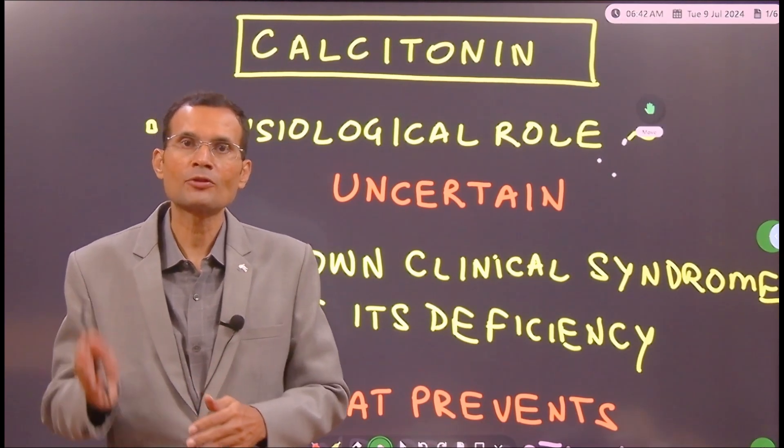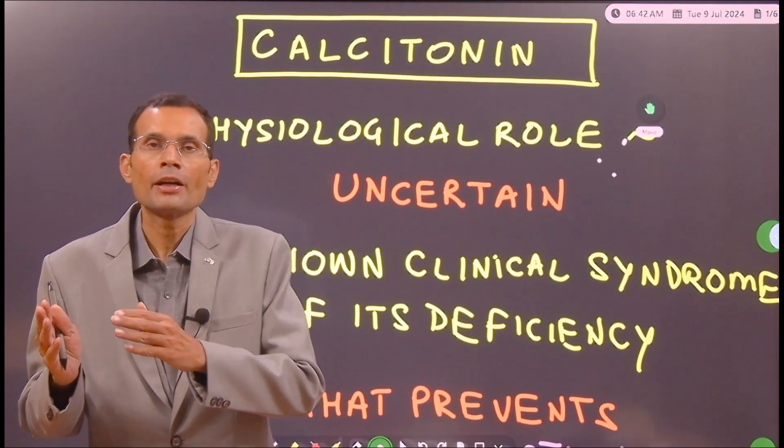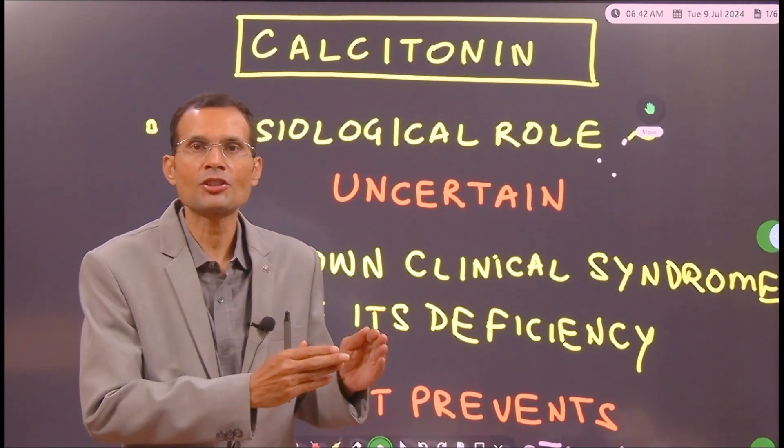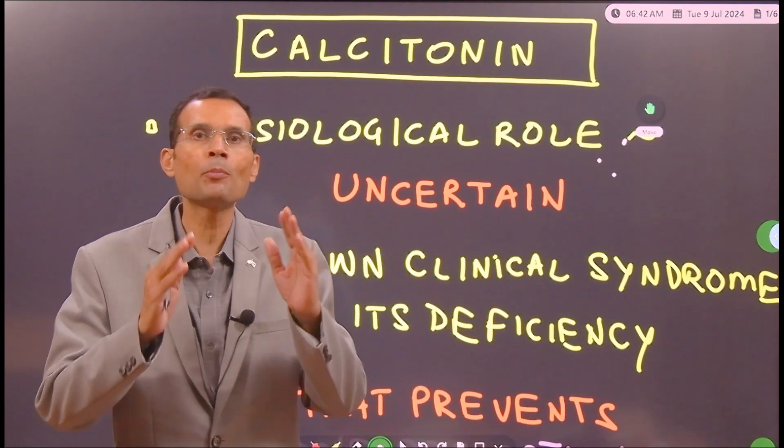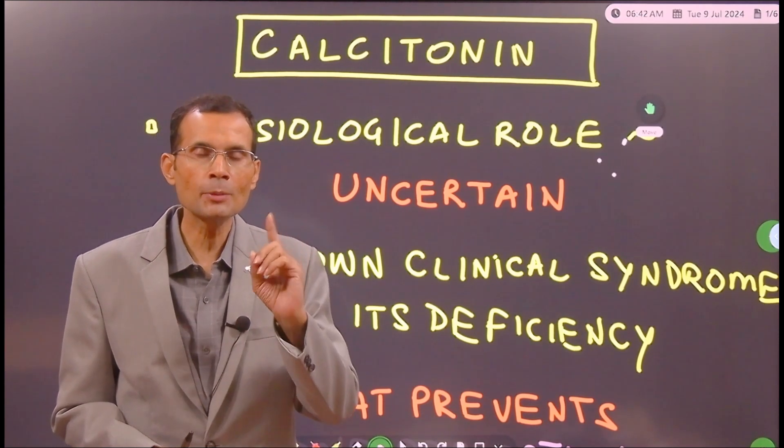Parathyroid hormone removes bone calcium and brings it into plasma, so it causes bone resorption. Calcitonin, on the other hand, has the opposite action. It removes plasma calcium and deposits it on bone, thereby preventing bone resorption.